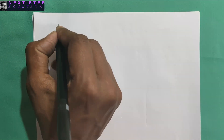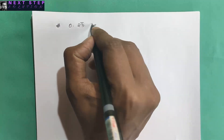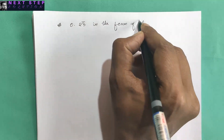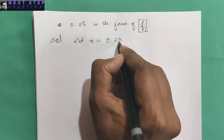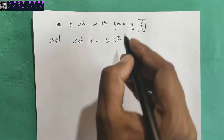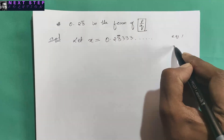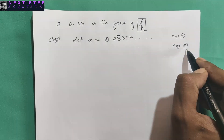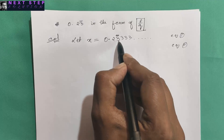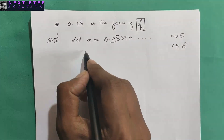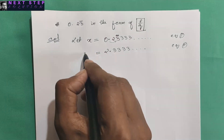Now suppose the question is to represent 0.23 bar in the form of p by q. Let x equal 0.23333. Be careful — the bar is only over 3, not over 2, so only 3 repeats. For equation one we need the decimal immediately before the repeating digit 3. Currently the decimal is before 2, so we multiply by 10 to get 10x equals 2.3333. This is equation one.